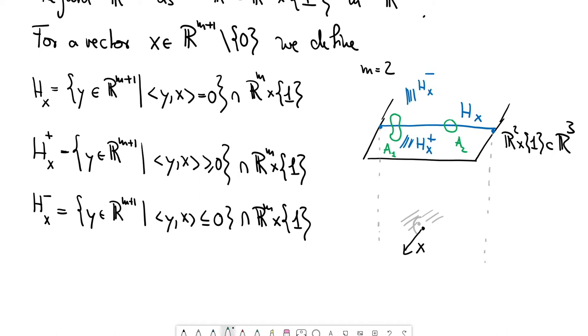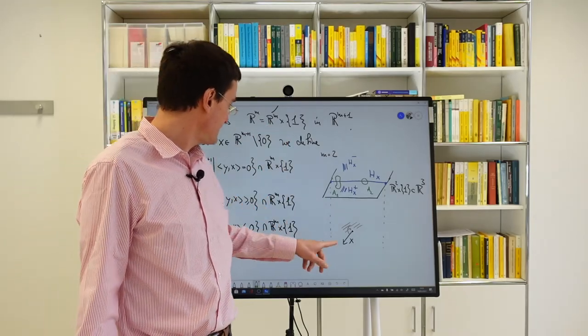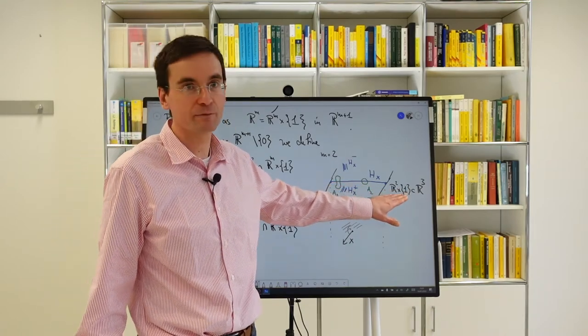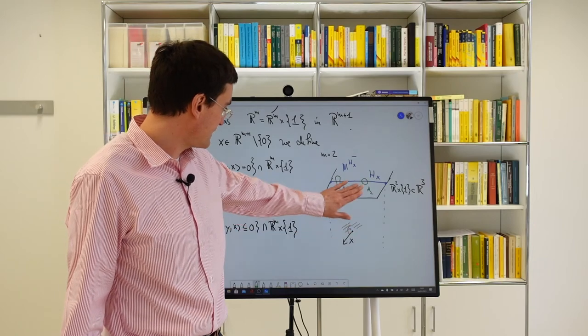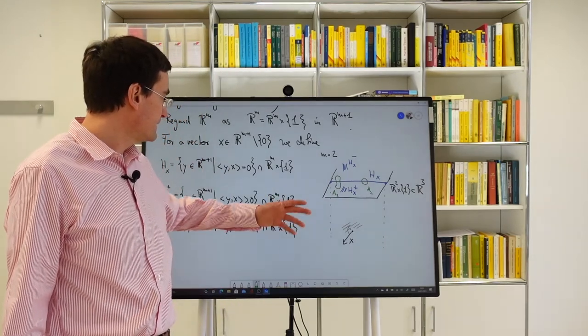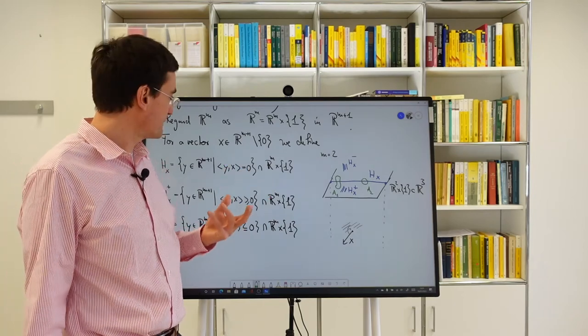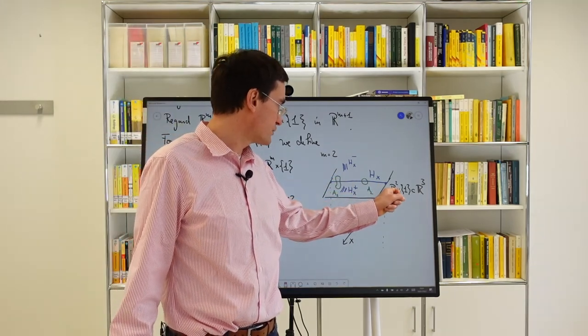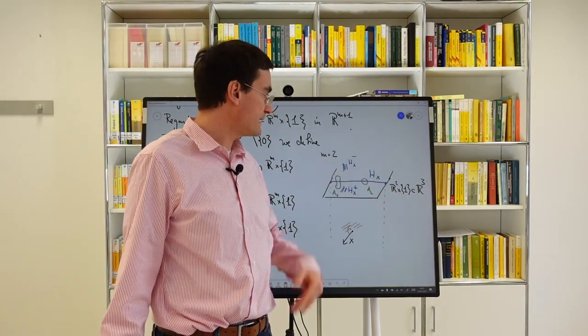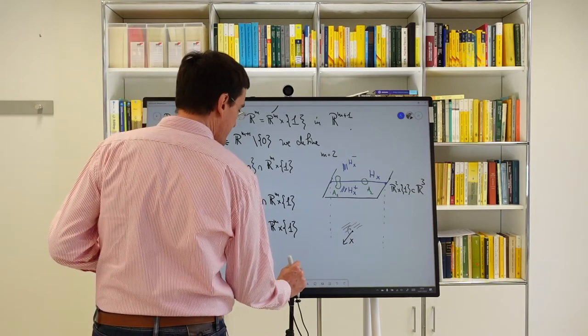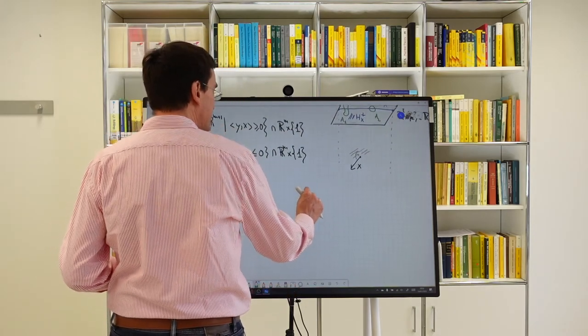How do we find this X? There is one exceptional case. It could be that HX is actually empty. This happens if the vector X is orthogonal to this affine hyperplane R squared times 1. The X that we will construct will not be of that kind. It will be an M minus one dimensional hyperplane in R to the M.